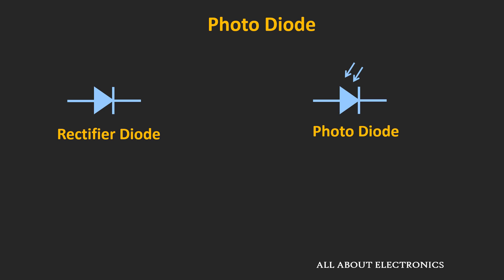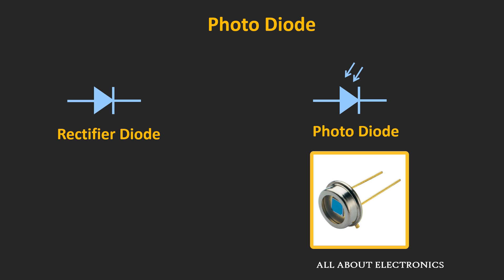If you see the symbol of this photodiode, it is very similar to the p-n junction diode. But here, it has incoming arrows, and these arrows indicate that whenever light falls on this photodiode, it generates the photocurrent. If you see the construction also, it is very similar to the p-n junction diode. But here, to receive the light, the active area of the photodiode is kept transparent.